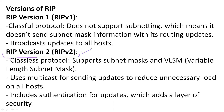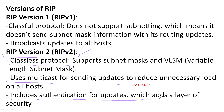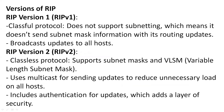RIP version 2 is a better protocol compared to version 1 because it is a classless protocol and supports subnetting. For sharing updates, it uses multicasting — the multicast address for RIP is 224.0.0.9. RIP version 2 also supports authentication, whereas RIP version 1 does not.